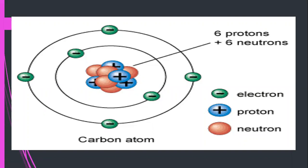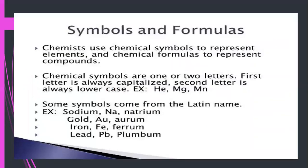The nucleus contains positively charged protons and neutral neutrons. In an atom, in the nucleus, protons and neutrons are present. Protons carry a positive charge and neutrons carry no charge, so overall the nucleus is neutral. Electrons are revolving around the nucleus in shells and carry a negative charge. Today we are going to study chemical symbols — the definition and some examples.